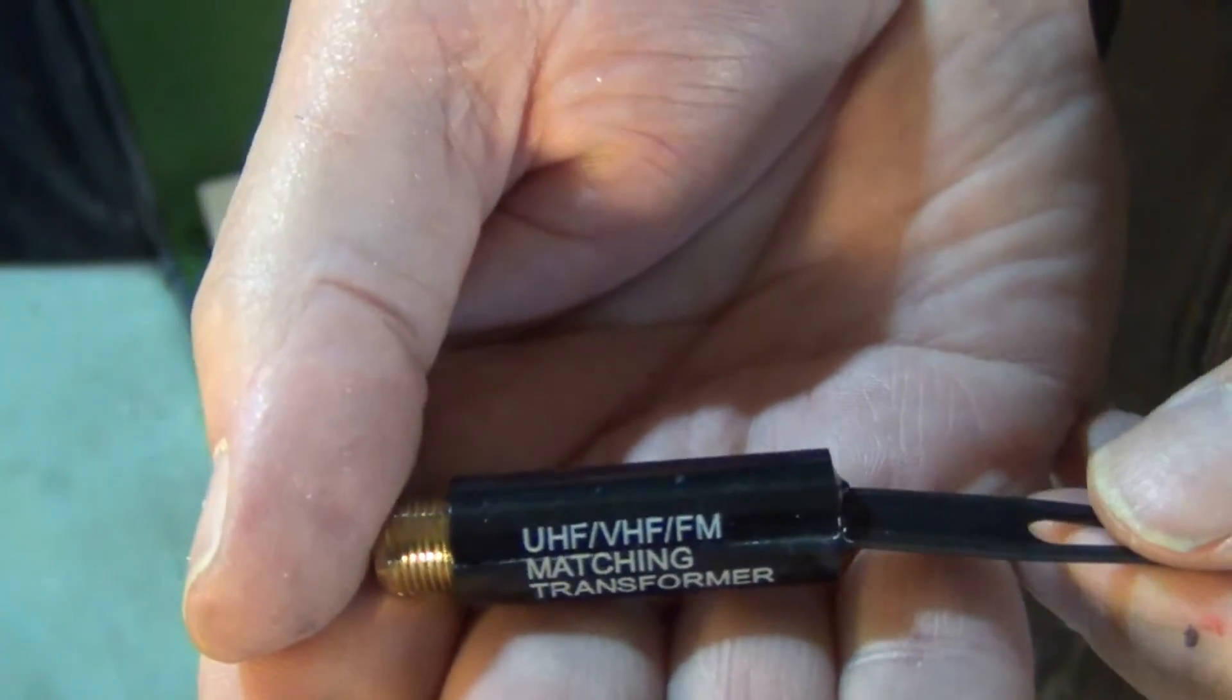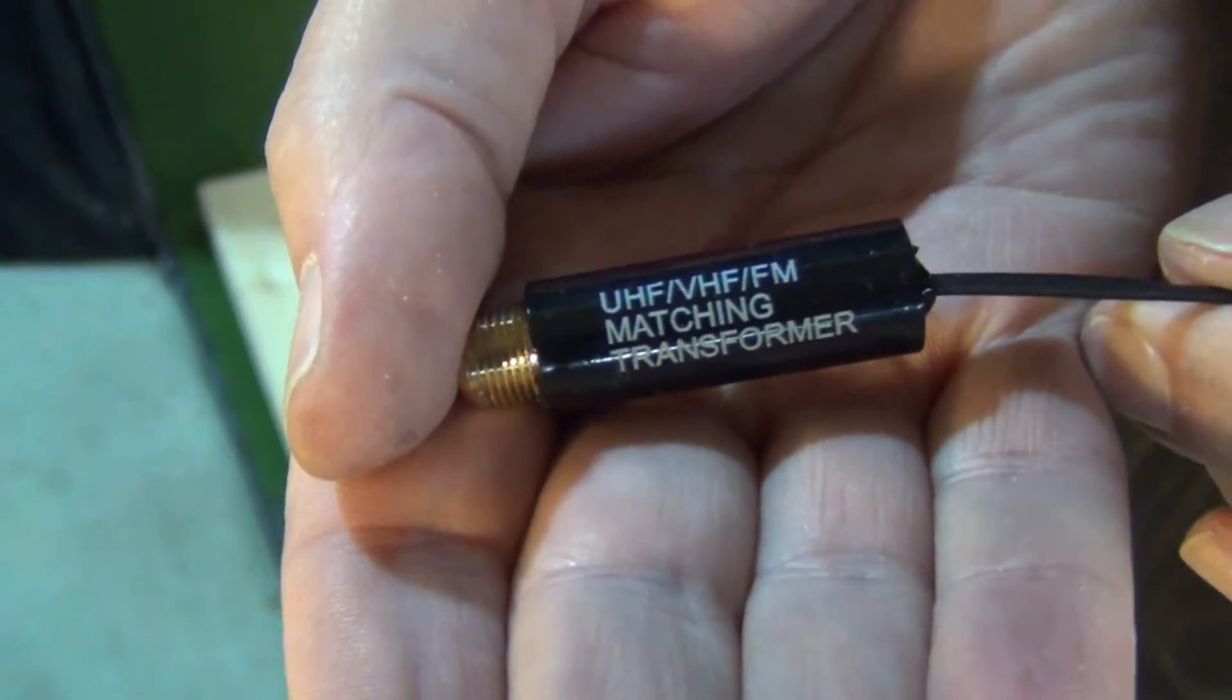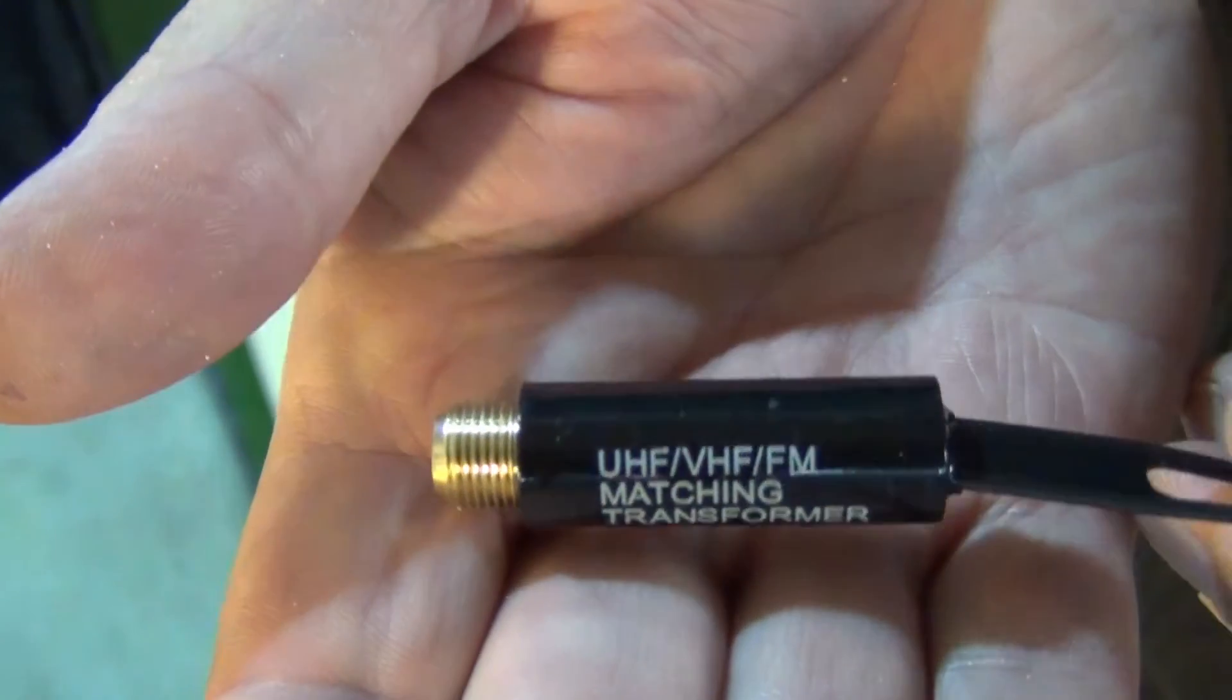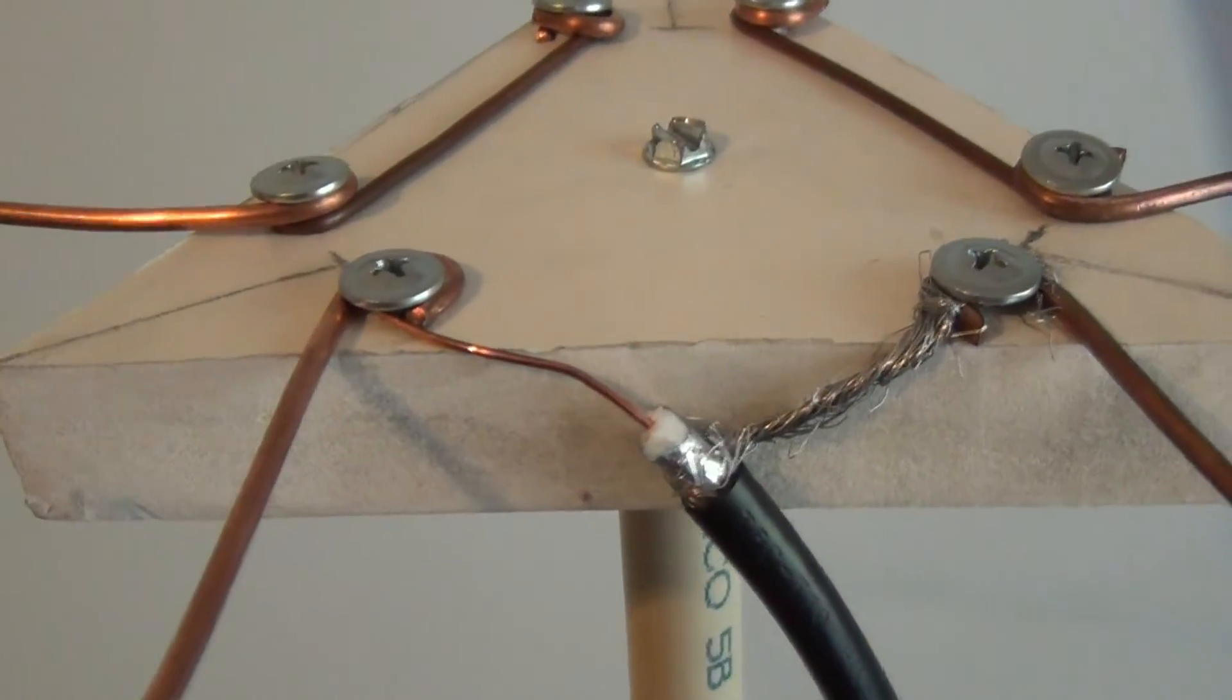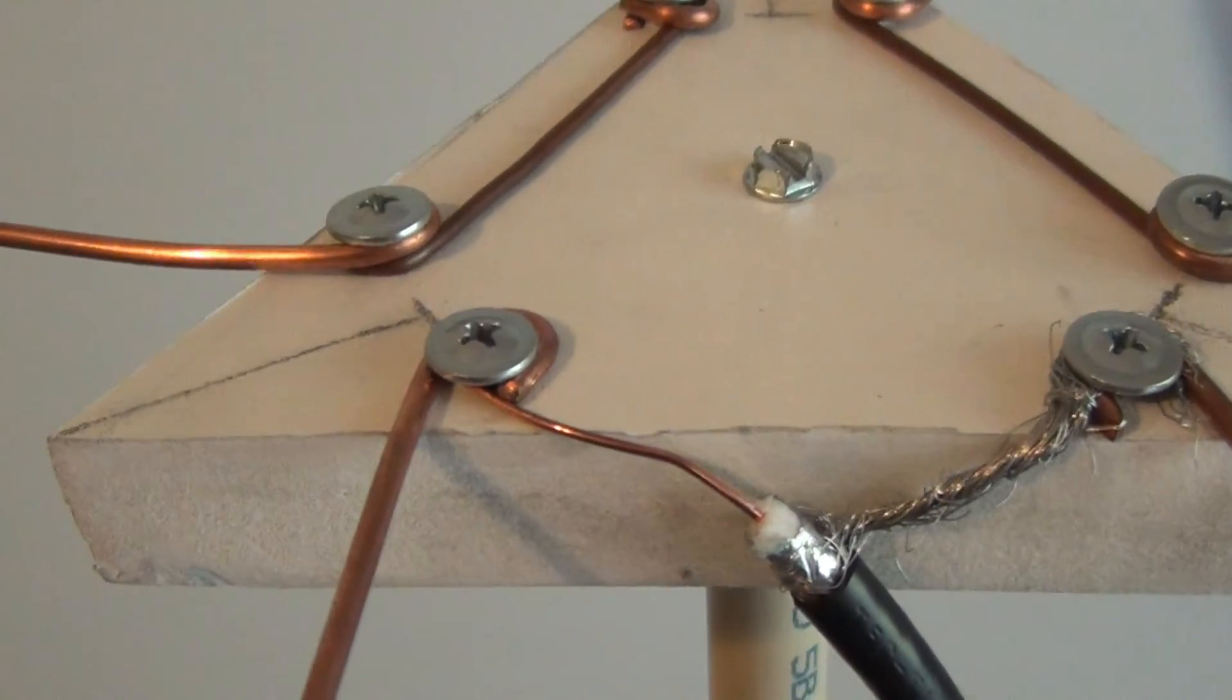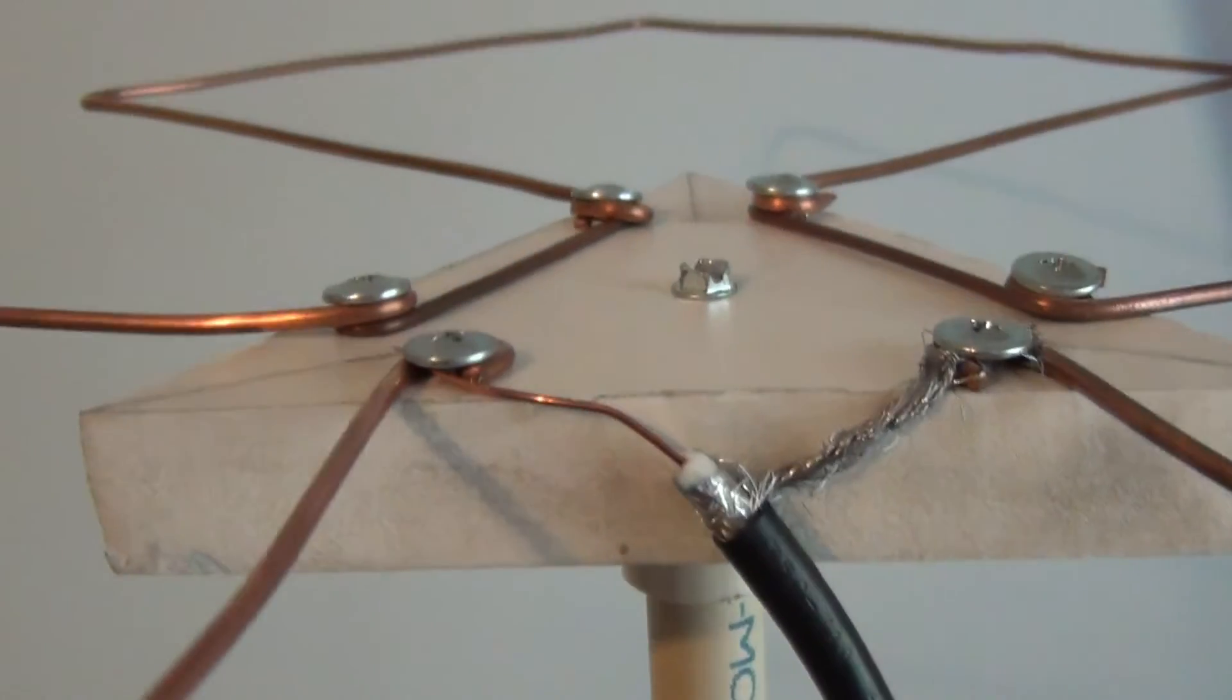To attach the cable to the antenna, I use a matching transformer. If you don't have one, you can order one very inexpensively from Amazon. You can just attach the inner and outer cable wires directly to the antenna without matching transformer, but this degrades the antenna's performance so I don't recommend it.